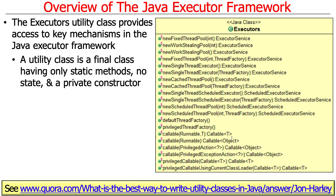This is what's called a utility class. A utility class in Java is a final class — meaning it's not capable of being extended — that has only static methods, no non-static state, no non-static fields, and a private constructor. What it really is is Java's way of having a group of functions nestled inside a class, because Java likes to put everything in classes. In C or C++ you could have a package or file with just a bunch of functions, but Java doesn't work that way.